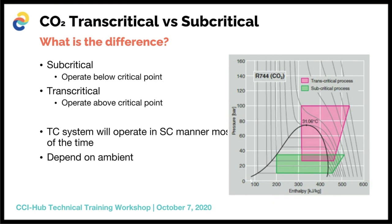I'd like to touch on CO2 subcritical versus transcritical operation. There is sometimes confusion around a plant being called a transcritical CO2 plant. The main difference is just in how it is operating. A transcritical plant can operate in a subcritical manner when the ambient is low enough — below the transcritical point of 31 degrees Celsius. Most areas have fairly cold ambient temperatures, so even a plant called transcritical will often operate subcritically.